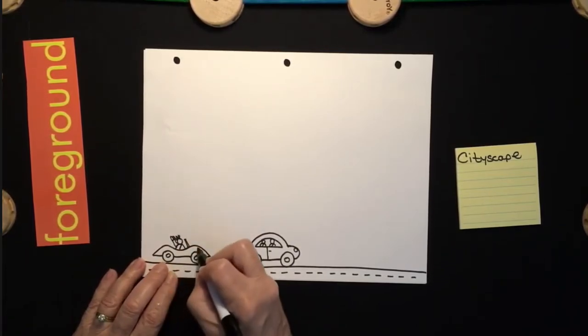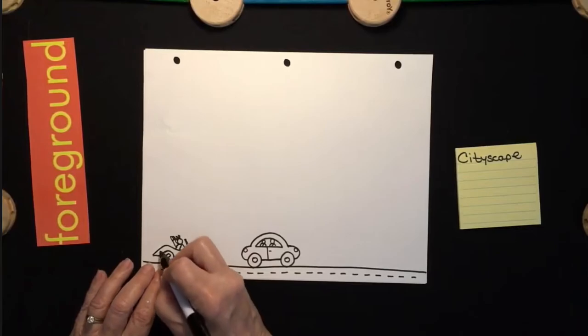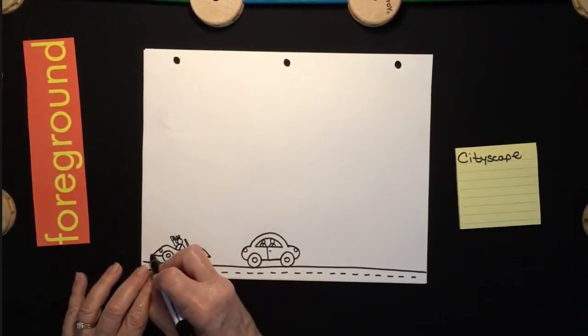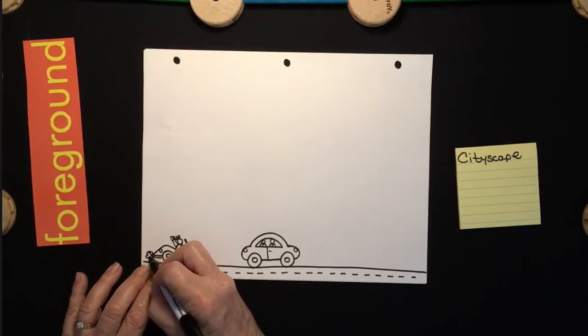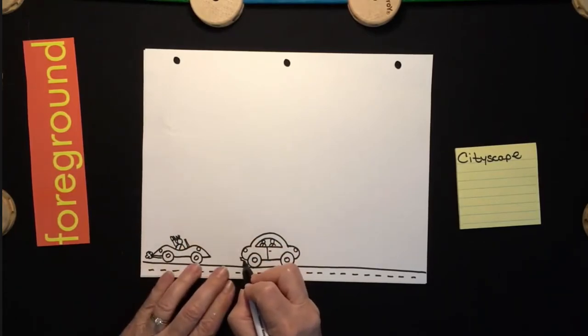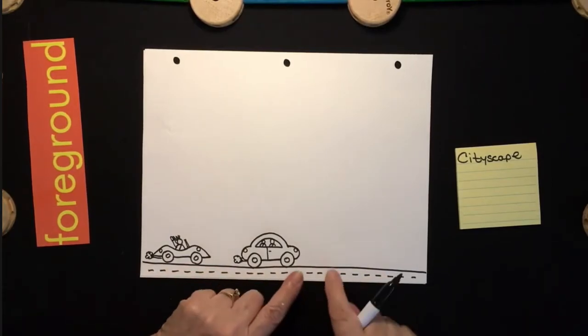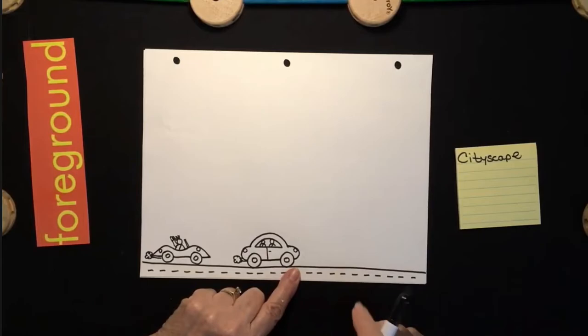Now this is going to be a convertible, so I'm going to make the windshield. Here's the driver, he's waving, his hair is blowing in the wind. There's a seat belt, his headlight, his tail light. I can make a little exhaust pipe with some stinky smoke.